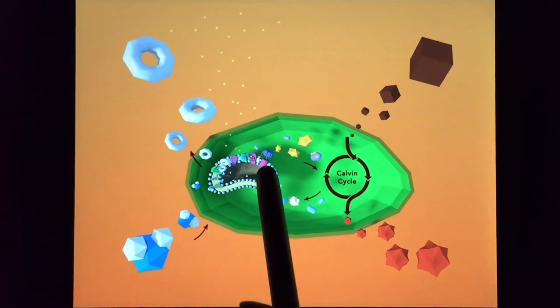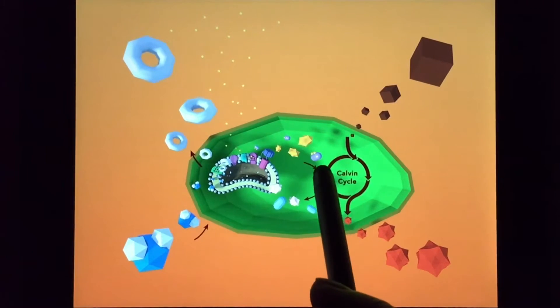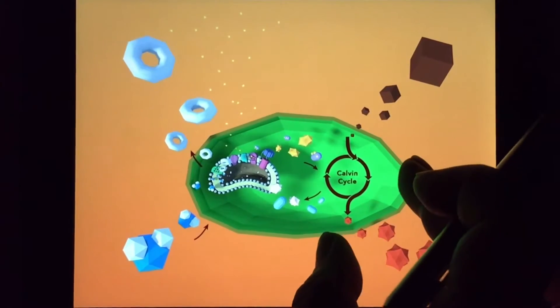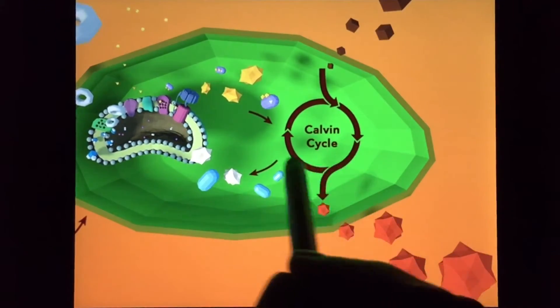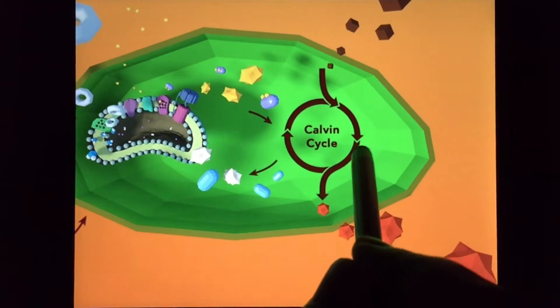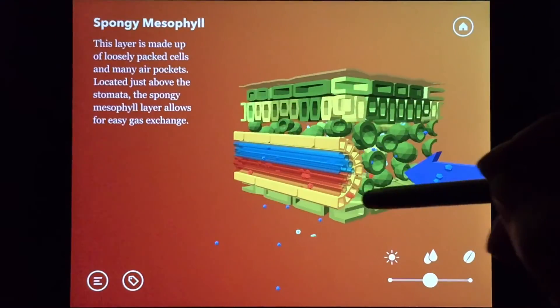Calvin Cycle takes NADPH and ATP from the light-dependent reactions and carbon dioxide. It performs further chemical processes and eventually produces glucose. Then those glucose molecules are transported throughout their system.